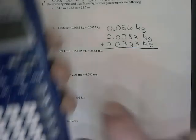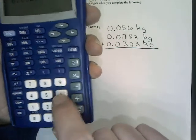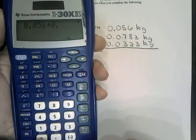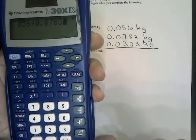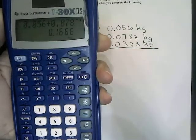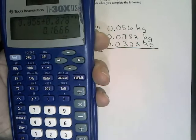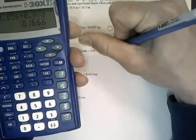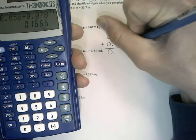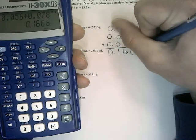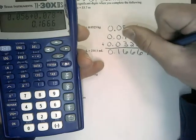I am just going to take 0.056 plus 0.0783 plus 0.0323. Now, I'm going to write this number down exactly as I see it. So 0.1666 kilograms.